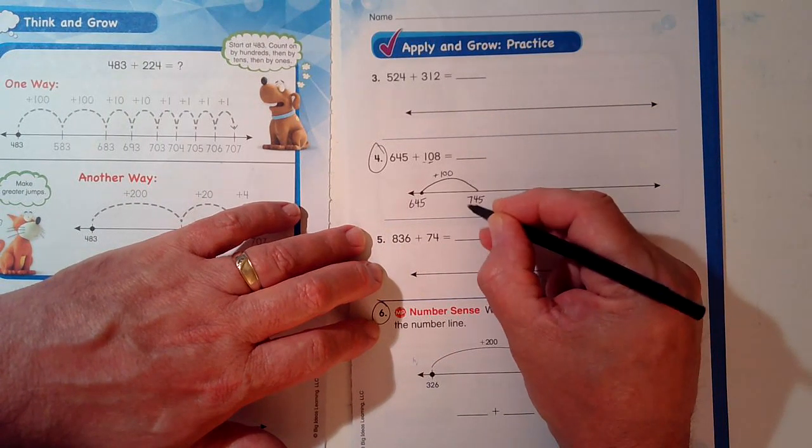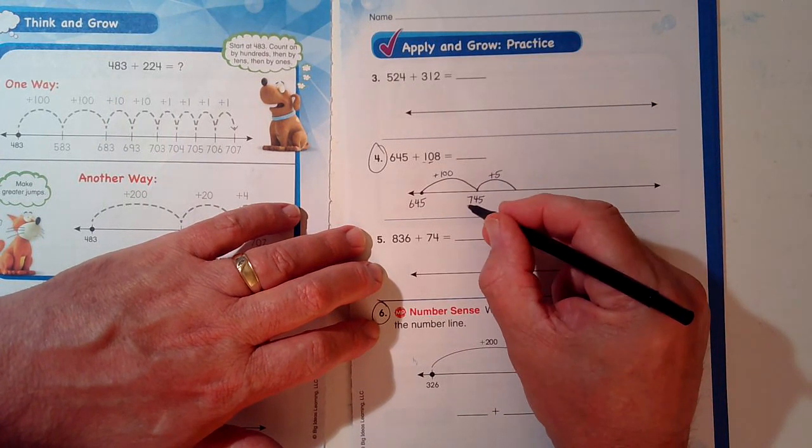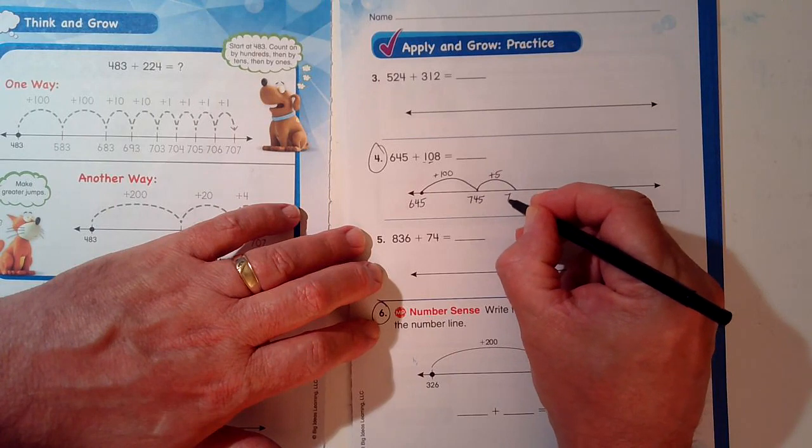So what do I do? 745. I want to get to the next 10, so I'll add five more. 745 plus five is 750.